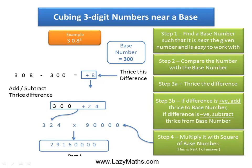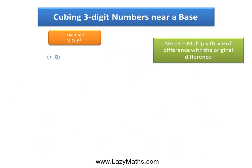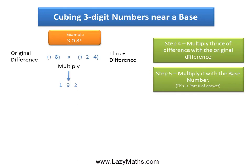Now let's look at how to get part two of the answer. We go back to the original difference, positive 8, and three times the difference, which is positive 24, and multiply the two together. So 8 times 24 gives us 192. Then we multiply 192 by the base number 300: 192 times 300 gives us 57,600, and this becomes part two of the answer.